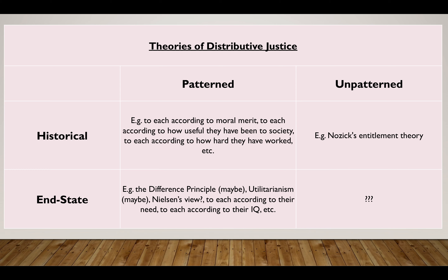Unlike either of those, Nozick's theory is unpatterned — there's no natural dimension that a just distribution has to meet — but it is historical as opposed to end-state. An interesting exercise: can you imagine an even remotely plausible theory that's both unpatterned and end-state? A distribution that can be just without looking at how it arose and without meeting any pattern at all? Maybe a theory of pure randomness — if distribution is arrived at purely randomly — could go in that fourth box. But in any case, all the theories of interest to us are not in that box.